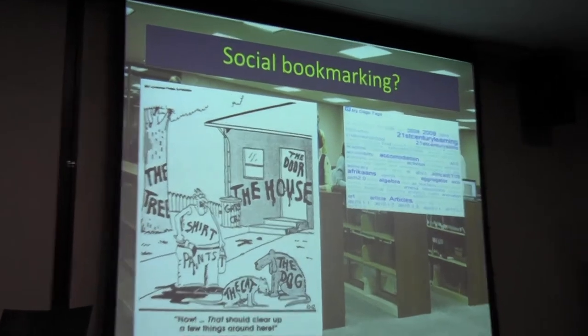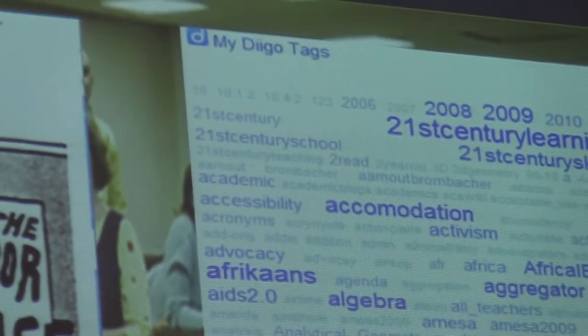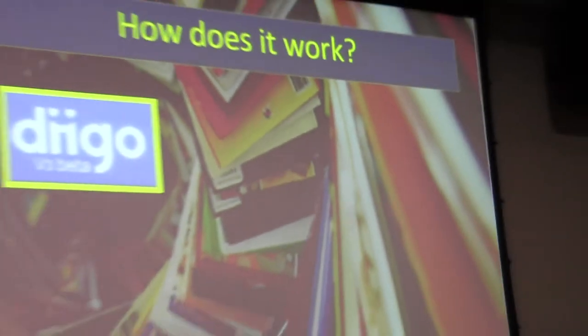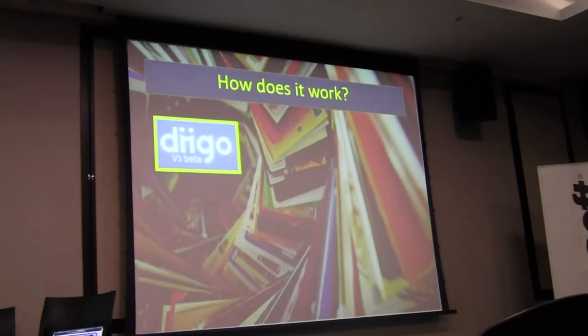If we click on the cloud, you can see I like traveling. Accommodation is quite big in my little cloud. So how does it work?